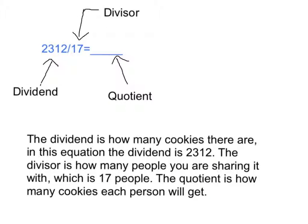The dividend is how many cookies there are. In this equation, the dividend is 2312. The divisor is how many people you are sharing it with, which is 17 people. The quotient is how many cookies each person will get.